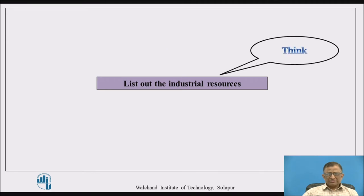Now, pause this video for a while and think about the industrial resources. Just list out all the industrial resources that you know, where you can imagine they are imposing constraints on the objective.